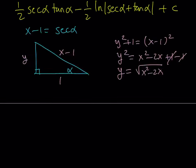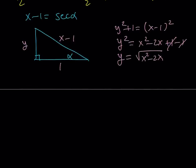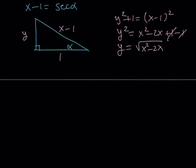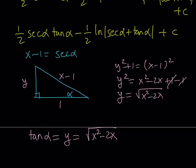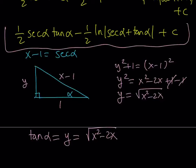Now I want to find tangent alpha from the triangle. Tangent alpha is y over 1, which is y, and y is equal to the square root of x squared minus 2x.